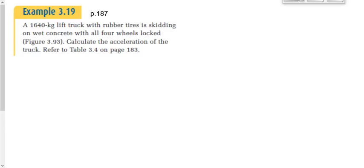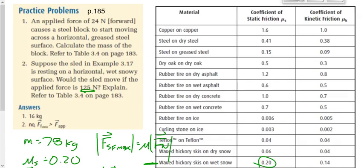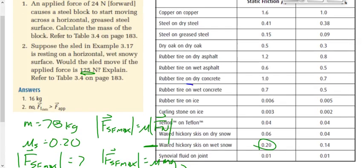Let's take a look at the example on page 187. It says a 1640-kilogram lift truck with rubber tires is skidding on wet concrete with all four wheels locked. Calculate the acceleration of the truck. It's skidding — sliding — so this is kinetic friction. We have a mass of 1640 kilograms and a coefficient of kinetic friction between rubber and wet concrete of 0.5.